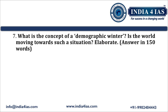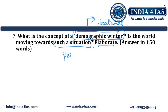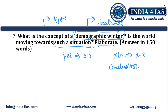Now we will discuss question number 7: 'What is the concept of demographic winter? Is the world moving towards such a situation? Elaborate.' The question has two parts. In the first part, we should explain what is demographic winter and write its features. In the second part, we should discuss whether the world is moving towards demographic winter — if yes, write two to three points; if no, write two to three points. Then write a conclusion.